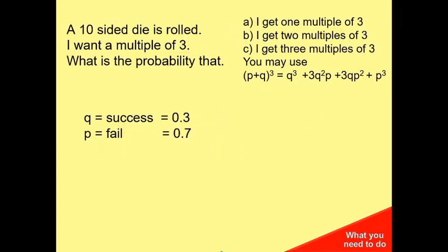Now if we model q as success and I know it's 3 out of 10, because our multiples of three must probably be three, six, or nine, and it's ten of them, I know the probability of fail must be 0.7 because that's equal to one.